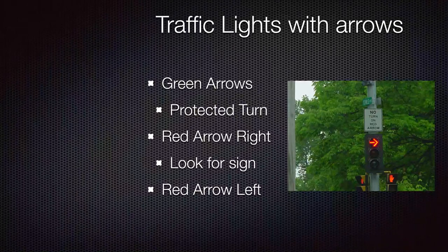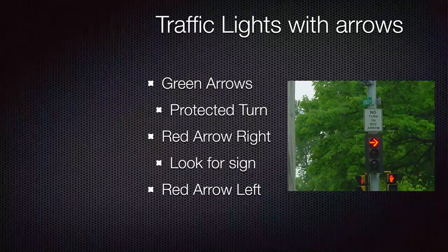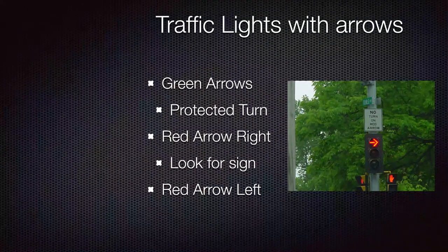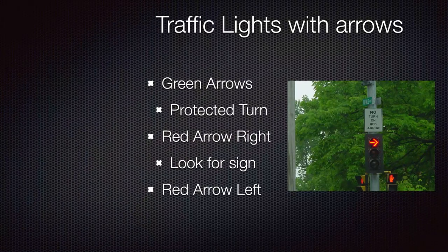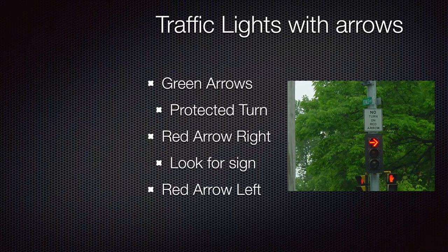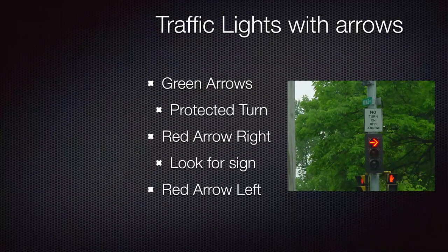Lights with arrows — we call those protected turns. Write that down: anything with a green arrow is a protected turn. It could be right or left, meaning no other traffic is going in that direction. If it's a red arrow, we've got to obey any sign above — no turn on a red arrow, so wait for the green arrow. If that sign weren't there, you could stop and turn right on red because it would be legal.